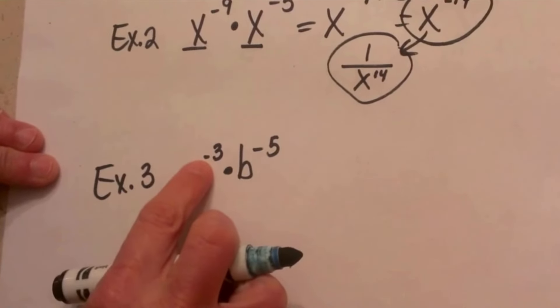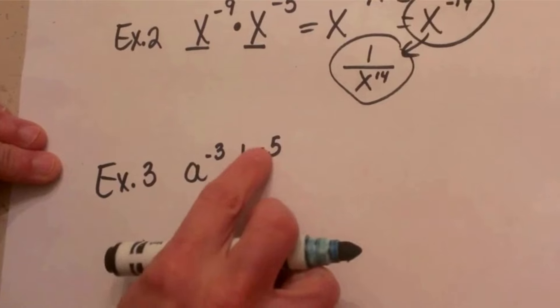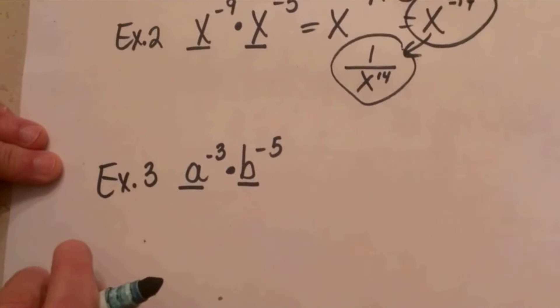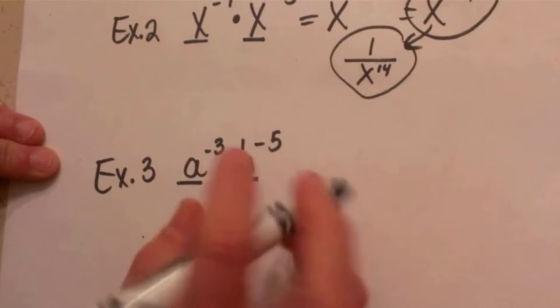We have a to the negative 3rd times b to the negative 5th. Notice our bases do not match. That means we can't add exponents.